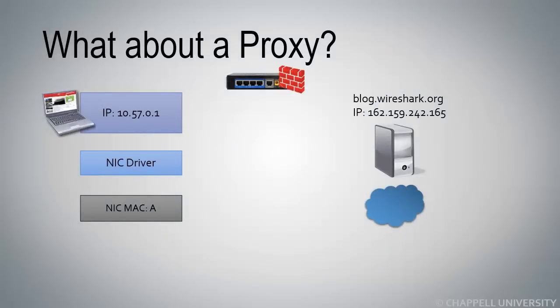What about a proxy box? A proxy box is different than a network address translation box — it's definitely different than a switch and a router, but proxy services may be bundled in with firewall services. Let's take a look at this scenario. We have a proxy box in the center that has a firewall process, and our client on the left-hand side is using IP address 10.57.0.1. The target it wants to reach is blog.wireshark.org, and this is the IP address that resolves to.